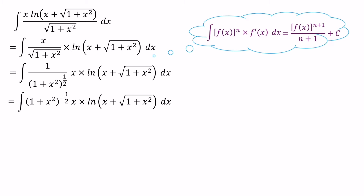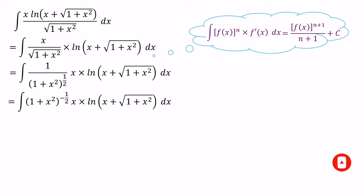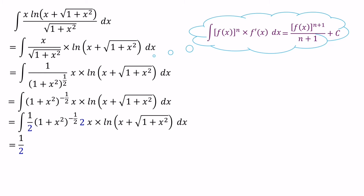We need to find f'(x), the differentiation of f(x). Differentiation of f(x) equals 0 plus 2x, because the constant 1 differentiates to 0 and x squared differentiates to 2x. So we need this 2x value. We can write 2 in the numerator, and to cancel it out, place another 2 in the denominator. Then we write one half outside of the integral, giving us: integral of (1 plus x squared) to the power of minus half, times 2x, times ln(x plus square root (1 plus x squared)).